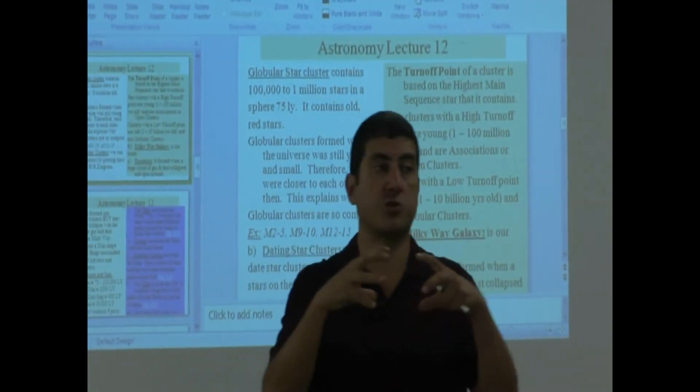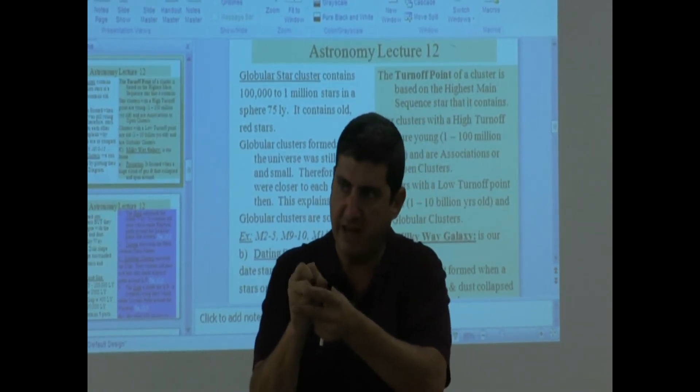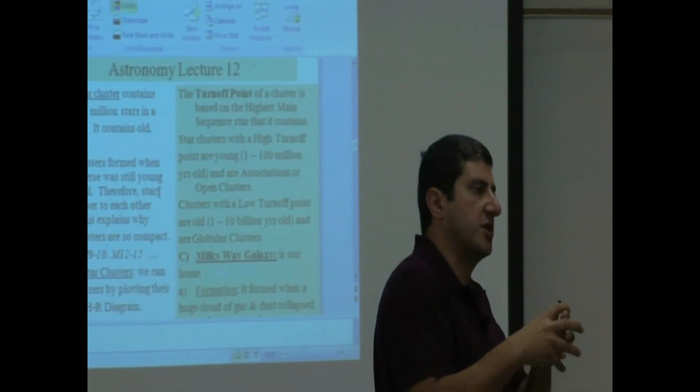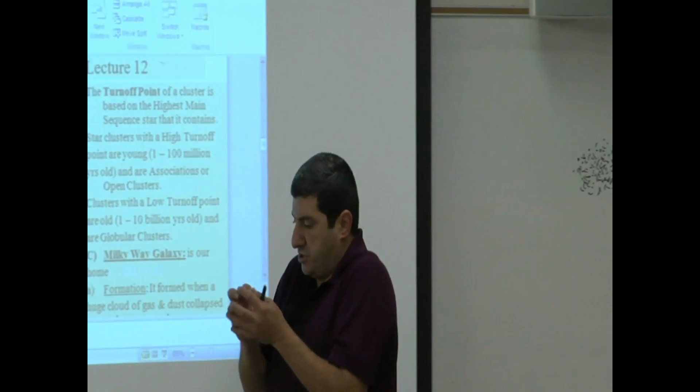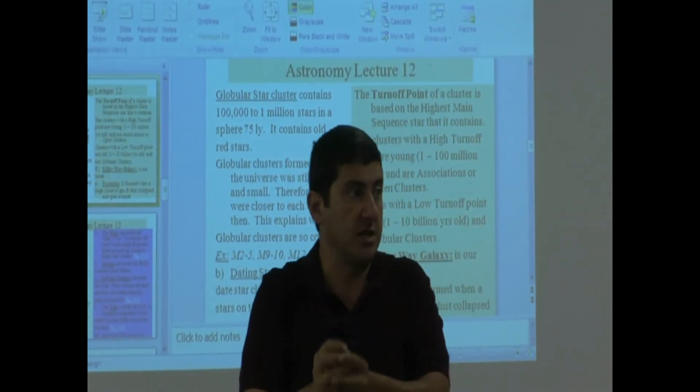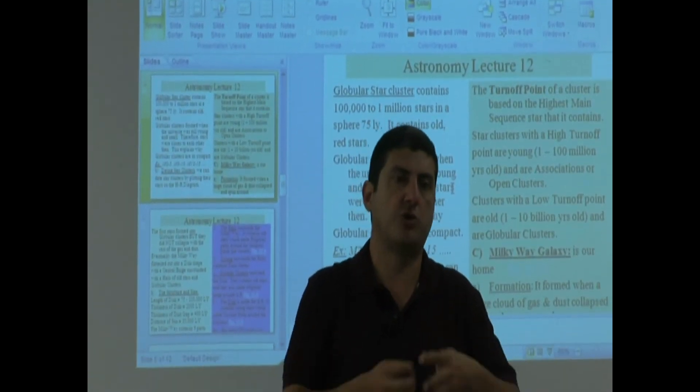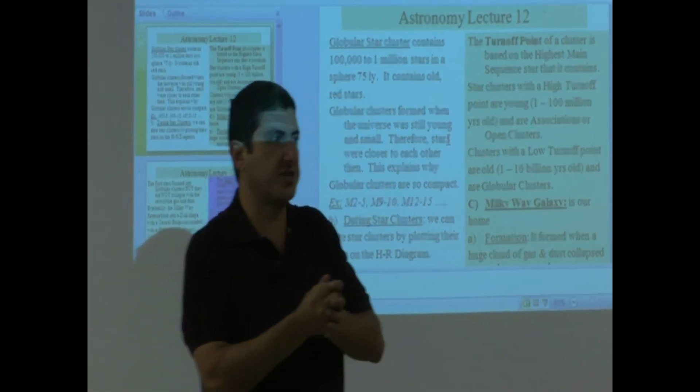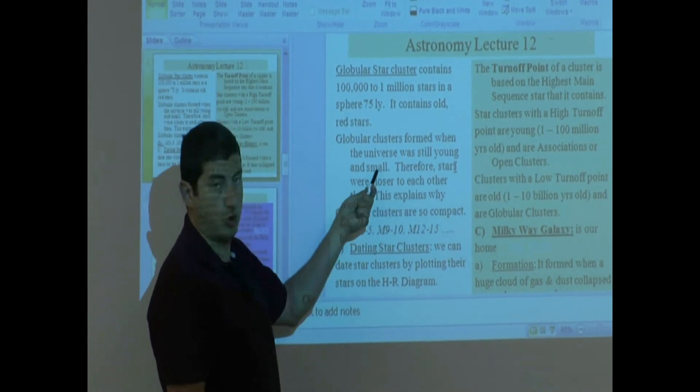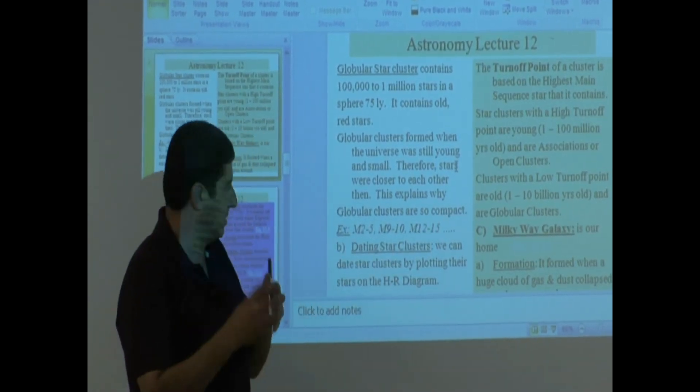The answer is, the globular clusters formed when the universe was smaller. When the universe just began. It was expanding, it was expanding. And then clusters of stars began gravitationally being attracted to each other. And since the universe was small, there were so many stars tightly packed. And it ended up that they were just all in that space. And since it formed very early in the history of the universe, every star in there that was big bright blue has now died. Those ones die. So the only thing that remains there are the old stars, the red stars, the cool stars. They live longer. So, globular clusters formed when the universe was still young and small. Therefore, stars were closer to each other then. You see? This explains why globular clusters are so compact.